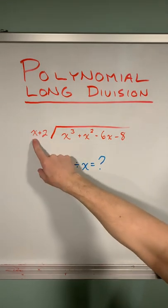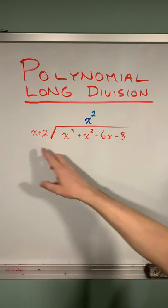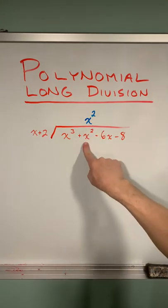And we ask ourselves, how many times does this x go into this x cubed? Well, x cubed divided by x is x squared. And we're going to place that over top of this x squared.